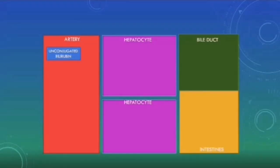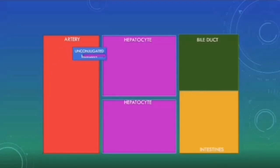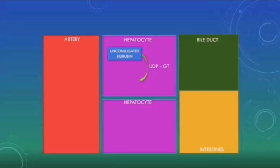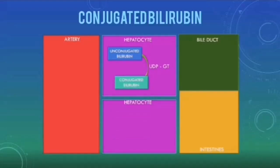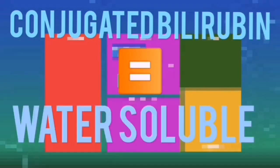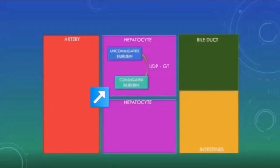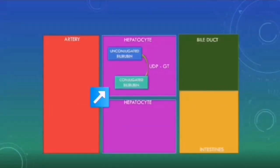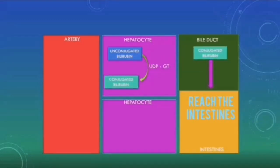The unconjugated bilirubin will reach the liver. As it is lipid-soluble, it can be taken up by the hepatocytes. Here, it will react with an enzyme called UDP-glucuronyl transferase. This enzyme adds a glucuronyl group onto the unconjugated bilirubin and forms conjugated bilirubin, which will be water-soluble. The liver will secrete the conjugated bilirubin along with bile into the bile ducts, and it will move through the bile ducts and eventually reach the intestines.